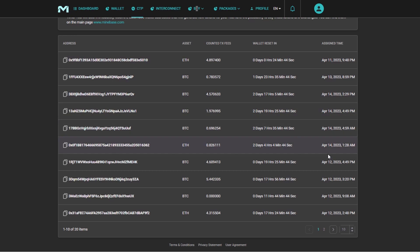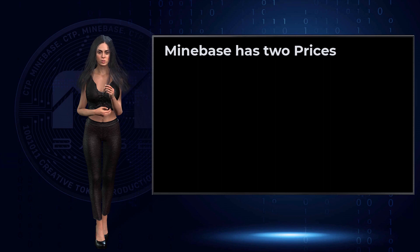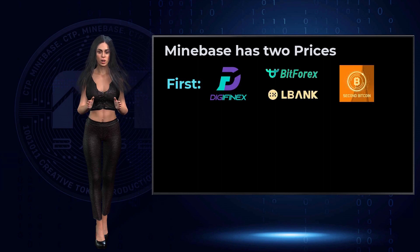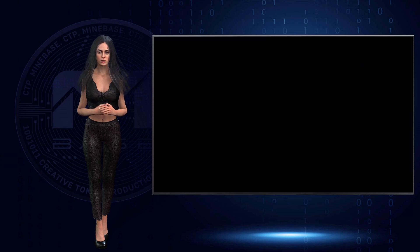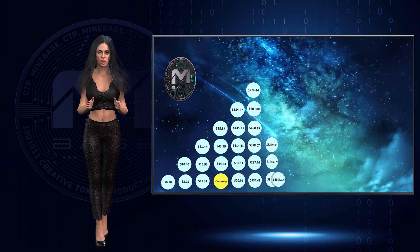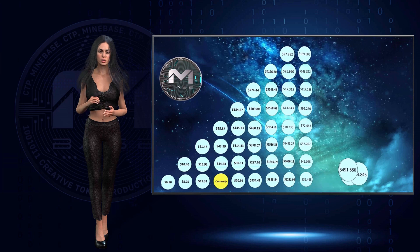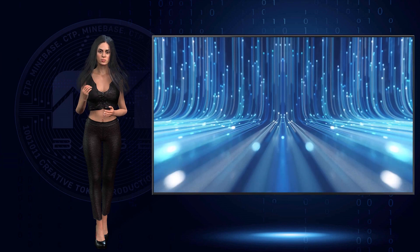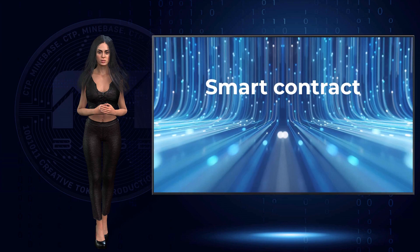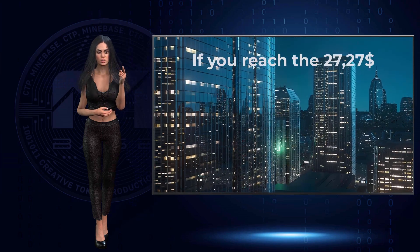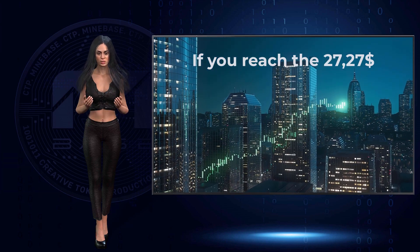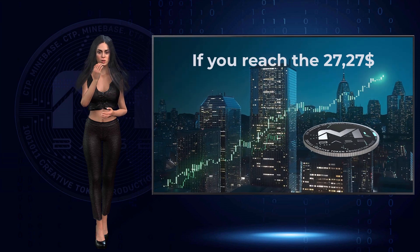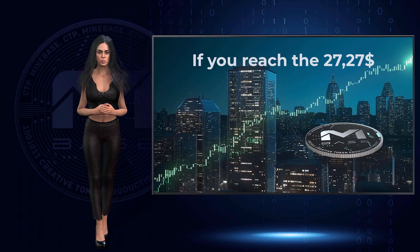You can see how long you have had each wallet address, because every 72 hours you automatically receive a new one. You can also see when you started with each wallet address. Minebase has two prices: the trading price on the exchange and the creation price. The creation price started at six dollars and fifty cents; currently it is twenty-seven dollars and twenty-seven cents, and you can see all the increases in the smart contract. Once your accumulated fees reach the creation price, you receive a token that you can trade freely.